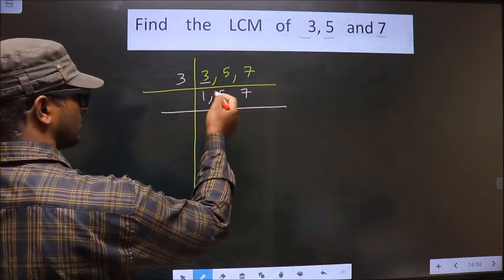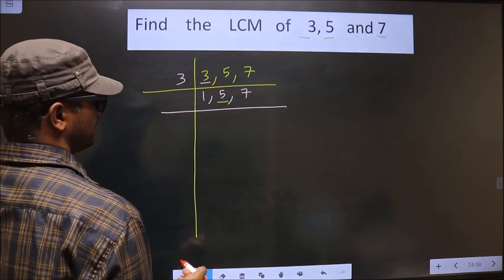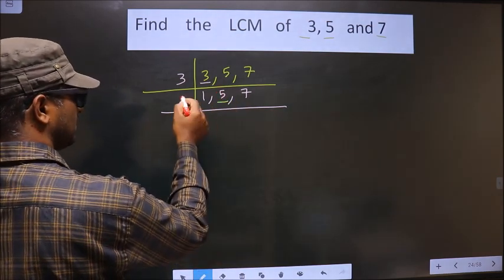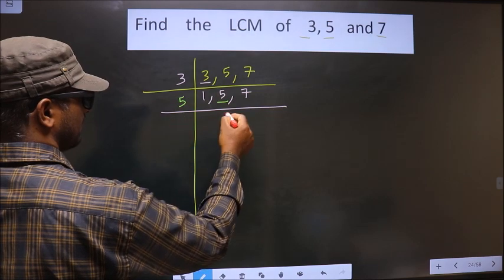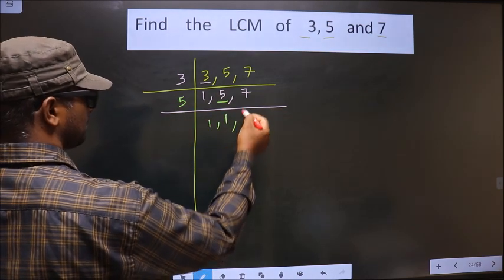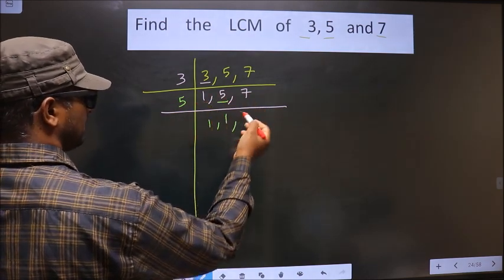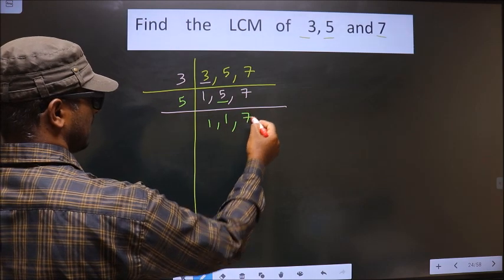Now, here we got 1, so focus on the next number, that is 5. 5 is a prime number, so we take 5 here. 5 once 5. 7 is not divisible by 5, so you write down 7 as it is.